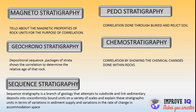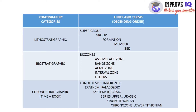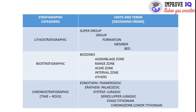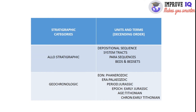During the elaboration I used the term 'stratigraphic unit,' so let's know what stratigraphic units are. For example, in the lithostratigraphy category the units are: supergroup, group, formation, member, and bed. The supergroup is the largest unit and bed is the smallest unit. You can take a screenshot of this page for the stratigraphy units.